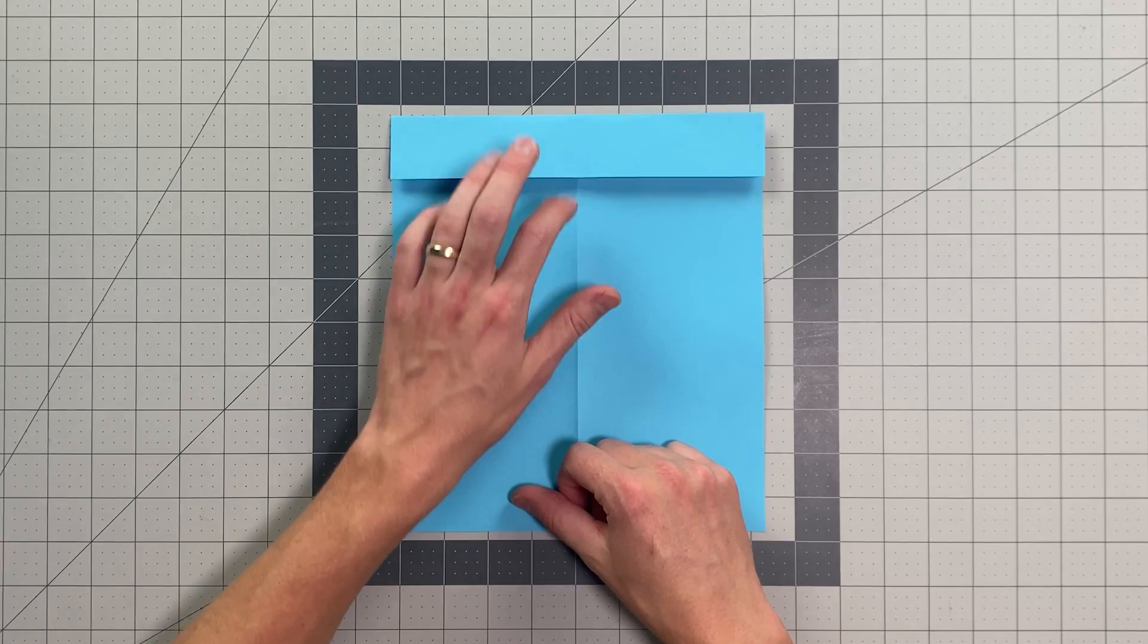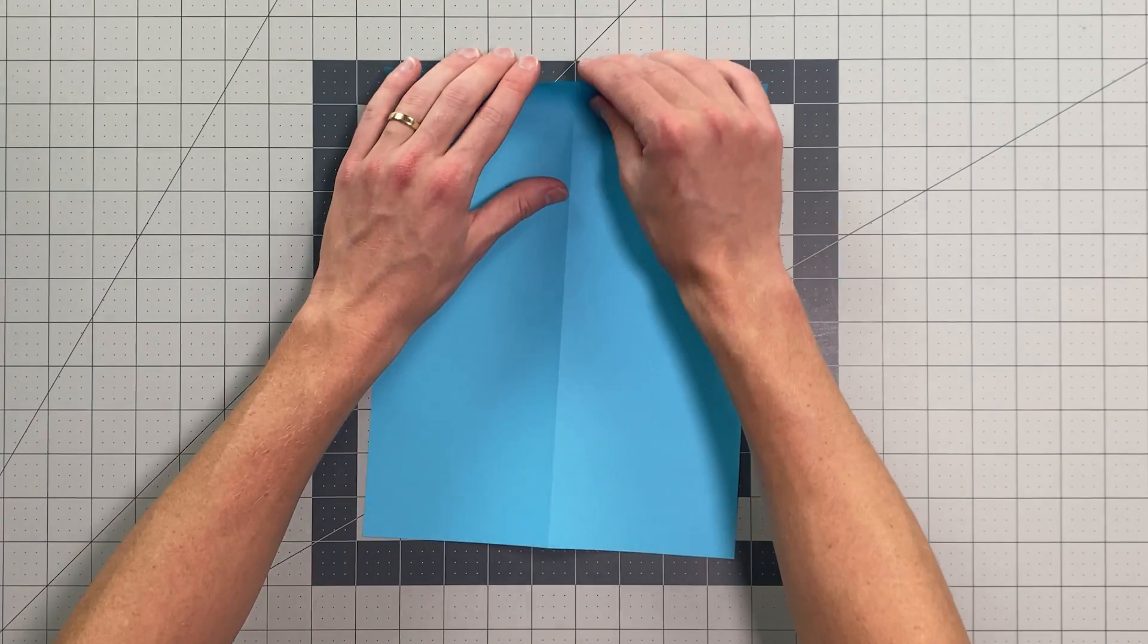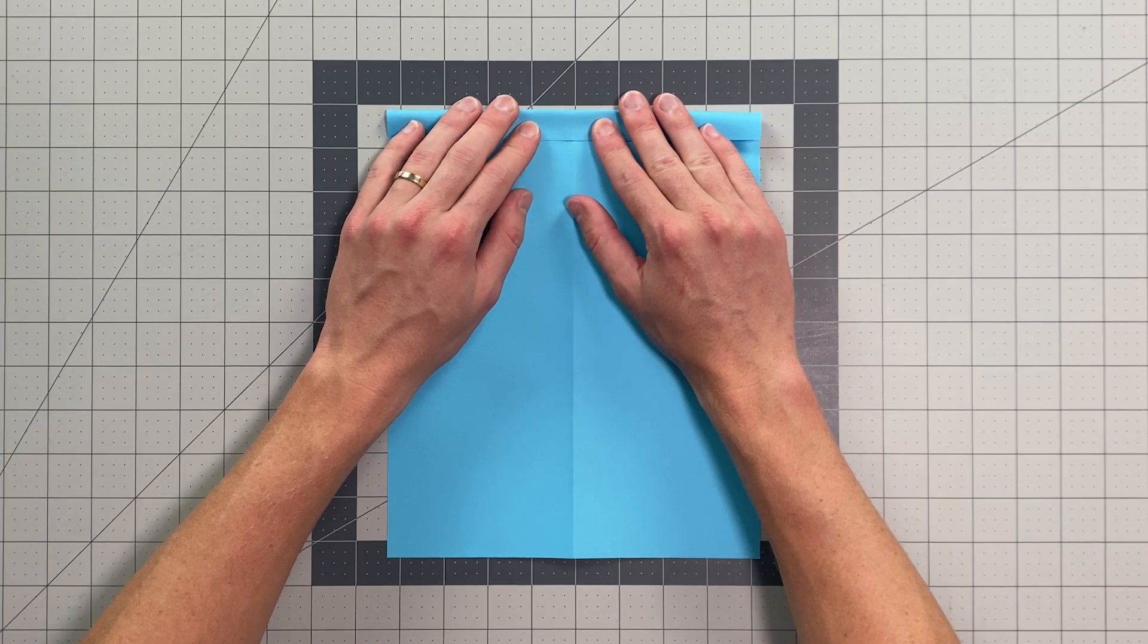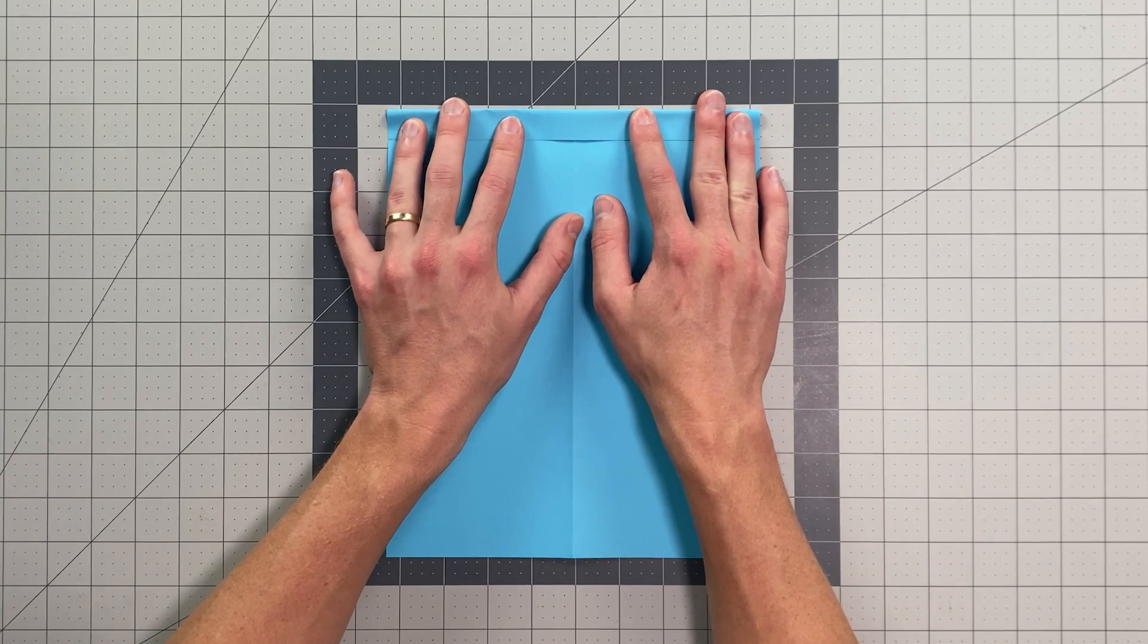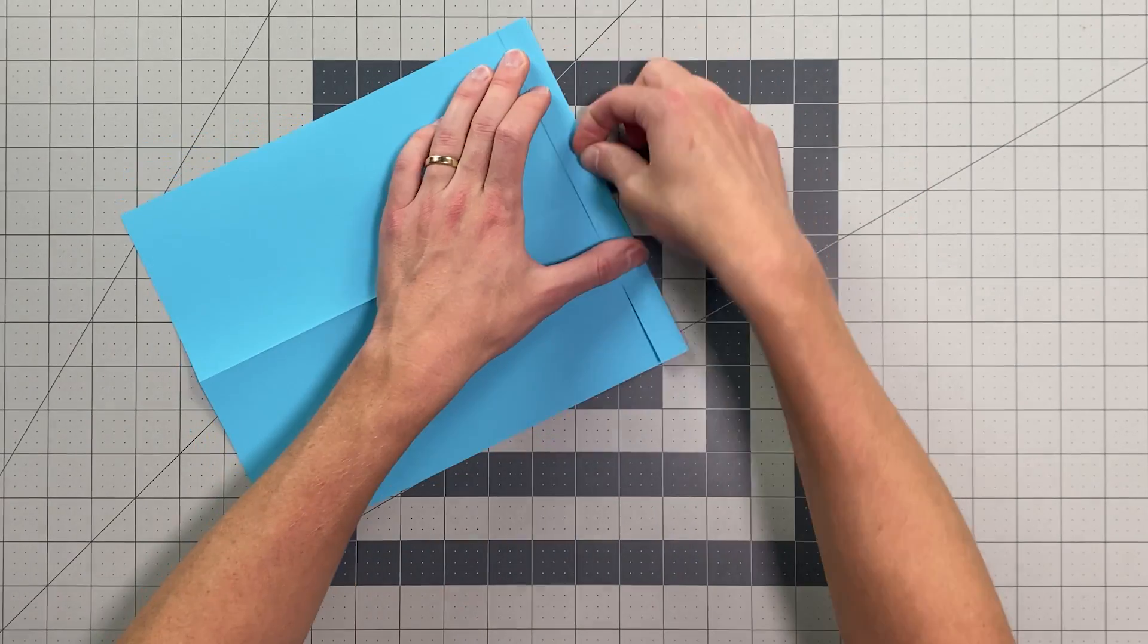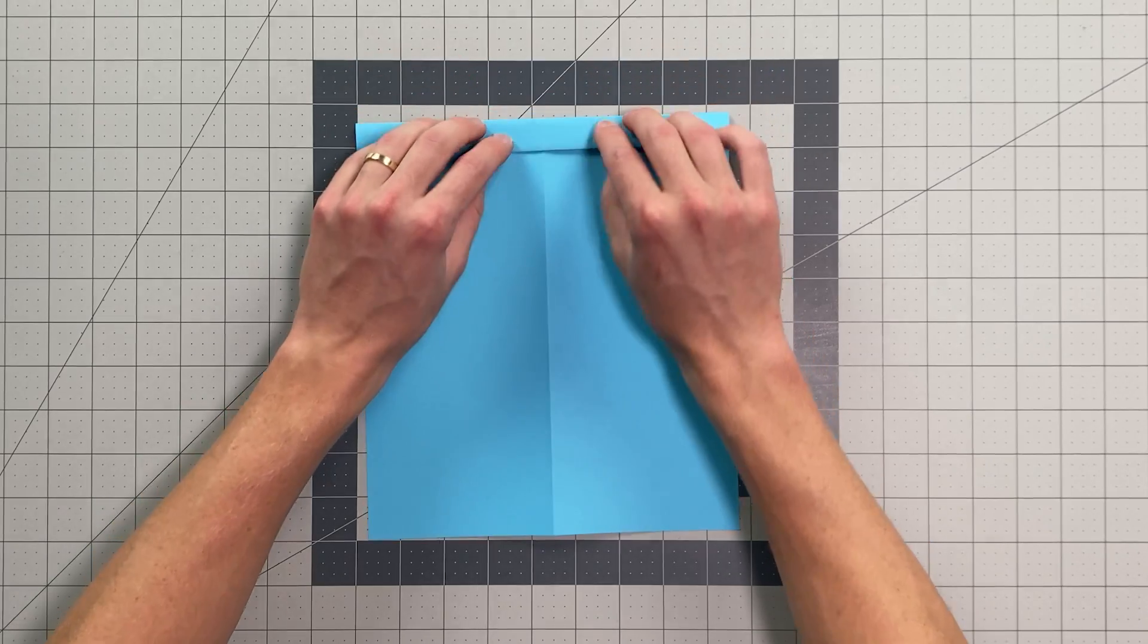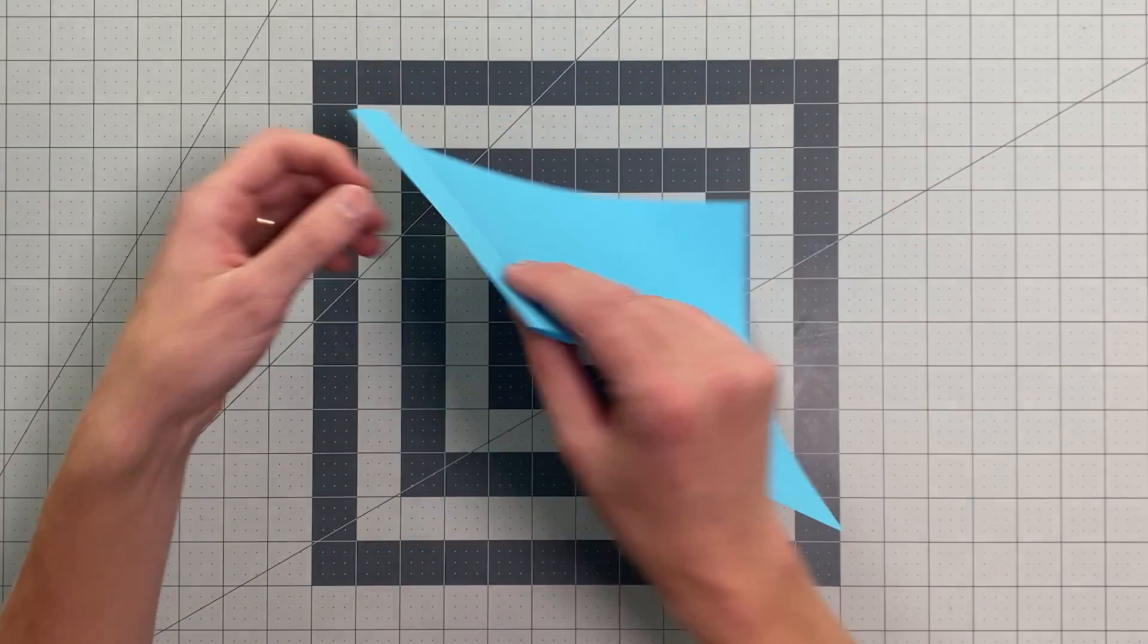And then we will open that up and fold the top edge almost to this crease. Leave just a tiny little gap between your edge and that crease. It should look like this. And then go ahead and roll that in on the existing crease you have. And now we'll flip the paper over.